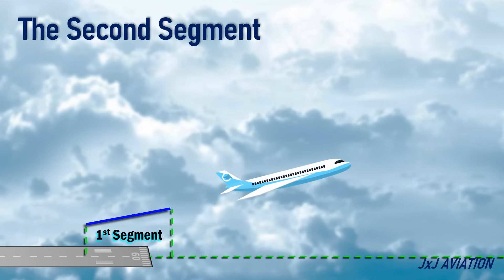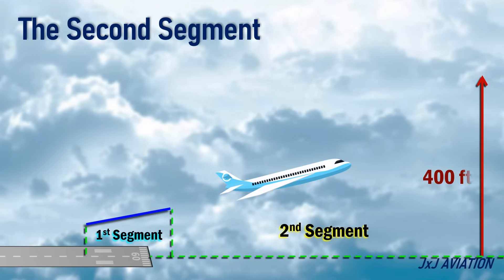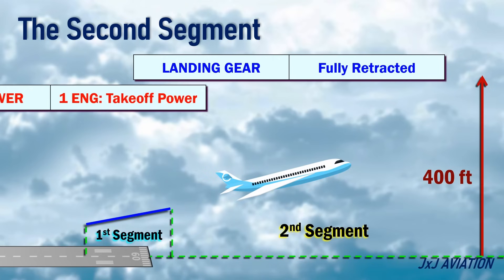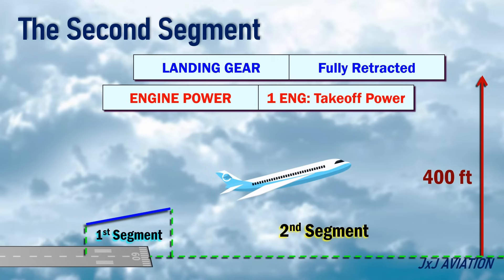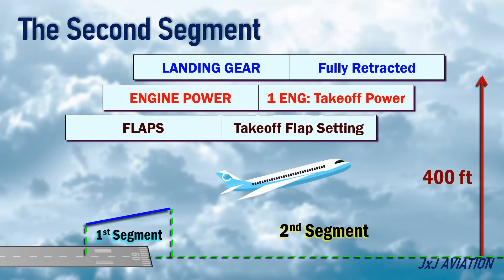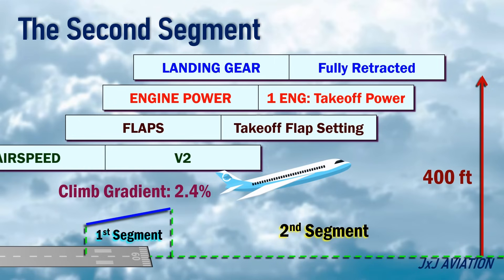The second segment. The second segment is the climb to 400 feet height above ground level. This segment starts when the landing gear is fully retracted. The running engine power is at full takeoff power. The flaps stay in the takeoff flap setting. During the climb, a two-engine aircraft should maintain a climb gradient of 2.4%. The airspeed to be maintained in this segment is V2.